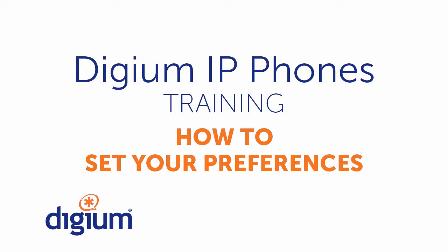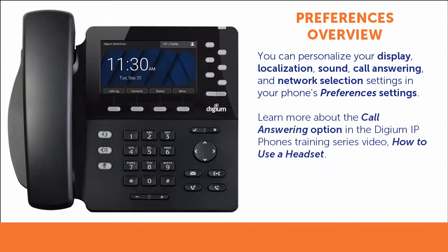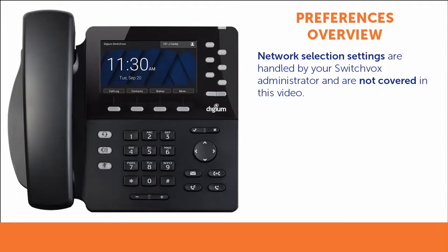Welcome to the Digium IP Phone Training Series, How to Set Your Preferences video. Your phone's preferences allow you to personalize your display, localization, and sound settings. There are also options for call answering and network selection. The call answering option is addressed in the Digium IP Phone's training video, How to Use a Headset. The select network setting is not covered in this video, since network selections are handled by your SwitchVox administrator.